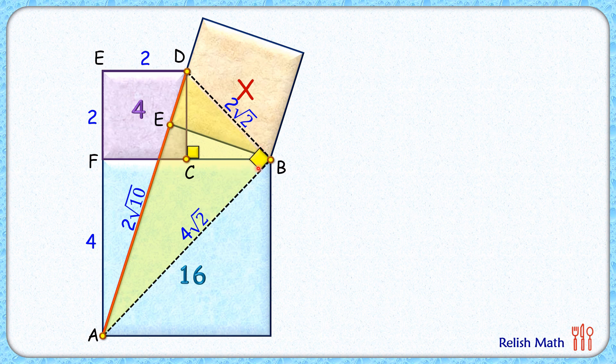Now the area of this yellow triangle will be half of base into height, so its area will be half of 4√2 times 2√2. Also, if we take DA as the base, then BE will be the height.